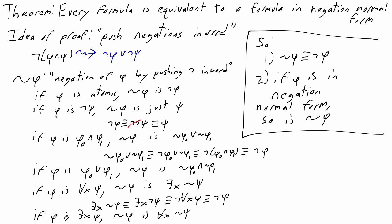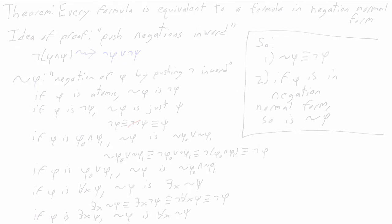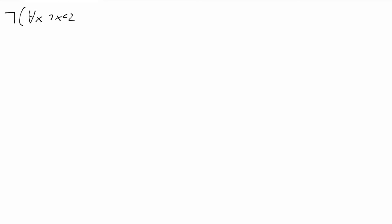Notice, if we take any formula, we can replace all the negations with this squiggly negation operation, and that gives us the equivalent formula in negation normal form. So to take one example, we start with not for all x, not x less than 2, and exists y, 1 is less than y or y is less than 7.